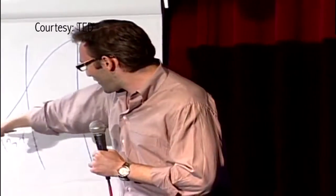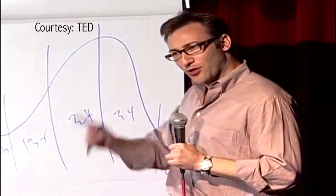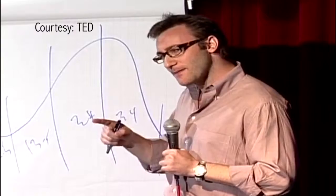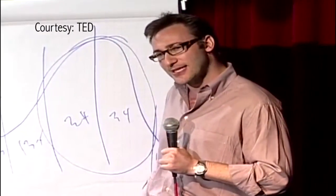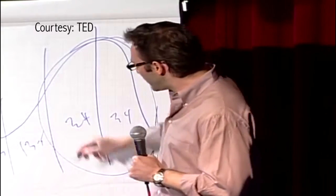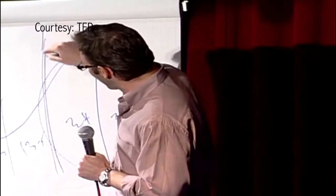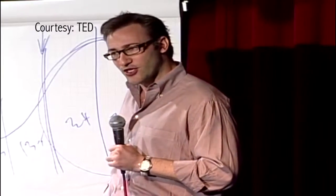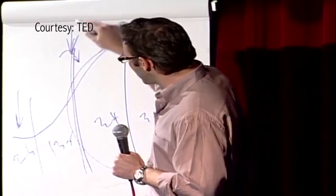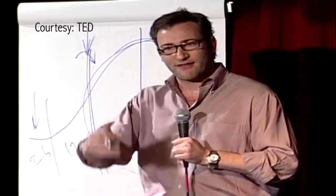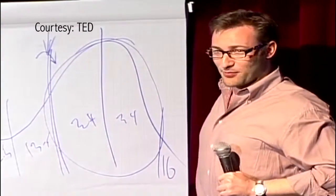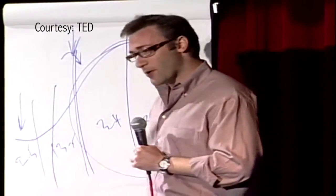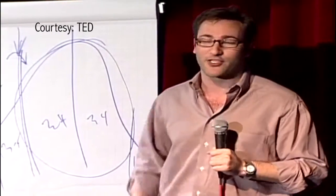We all sit at various places at various times on this scale, but what the law of diffusion of innovation tells us is that if you want mass market success or mass market acceptance of an idea, you cannot have it until you achieve this tipping point between 15% and 18% market penetration, and then the system tips. And I love asking businesses, what's your conversion on new business? And they love to tell you, oh, it's about 10%, proudly. Well, you can trip over 10% of the customers. We all have about 10% who just get it. That's how we describe them, right? That's like that gut feeling. Oh, they just get it.